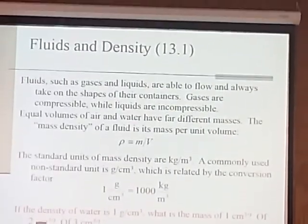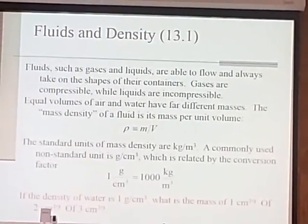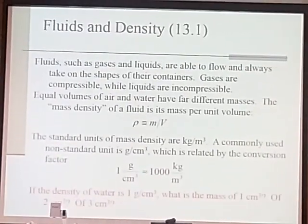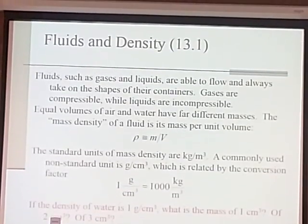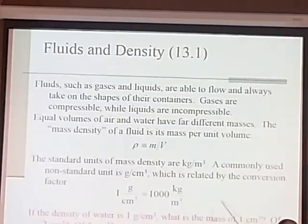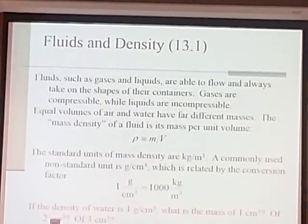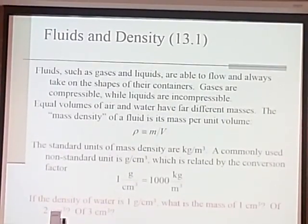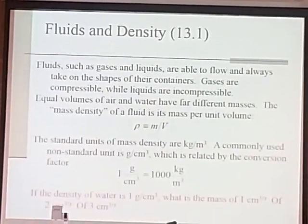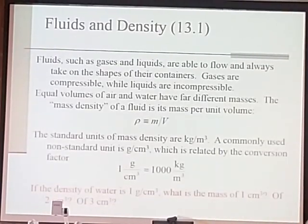Since density is defined as mass divided by volume, its standard unit is the standard units of mass divided by the standard units of volume, which is kilograms per meter cubed. However, that's a unit we rarely use in everyday life. A more common unit is grams per cubic centimeter, and there's a very simple conversion between the two.